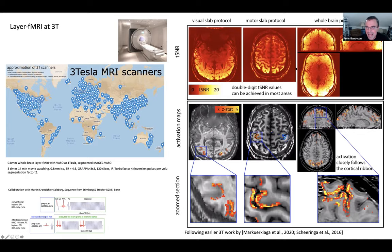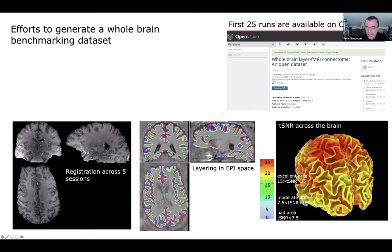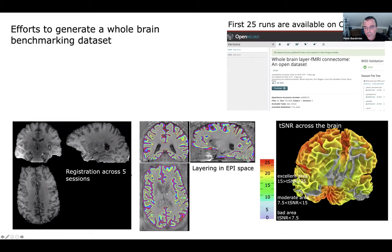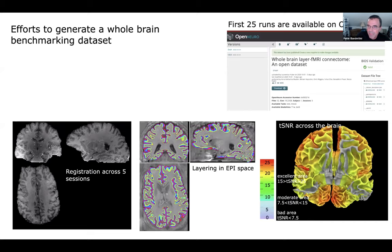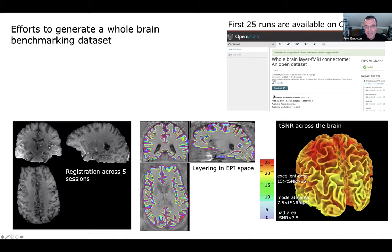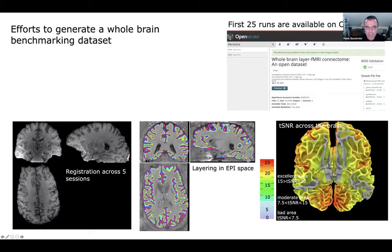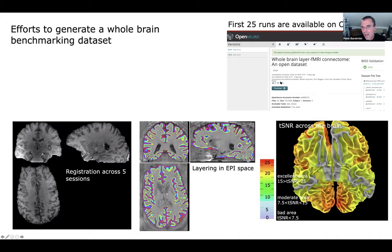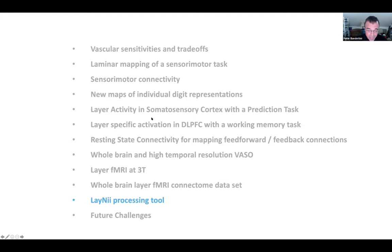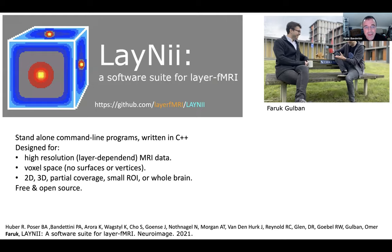Renzo is working on collecting a really nice open dataset for the world to analyze — a whole-brain layer fMRI connectome dataset available on OpenNeuro. The processing tools are still being developed for analyzing this extremely rich data, and I'm hoping it will be analyzed by many different groups. First author was Anna Katerina Mueller.